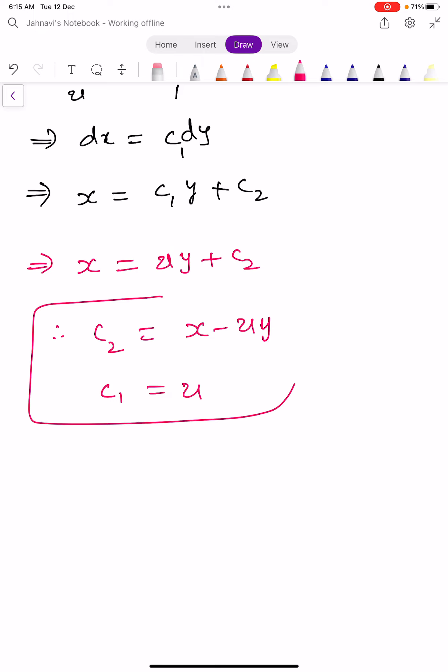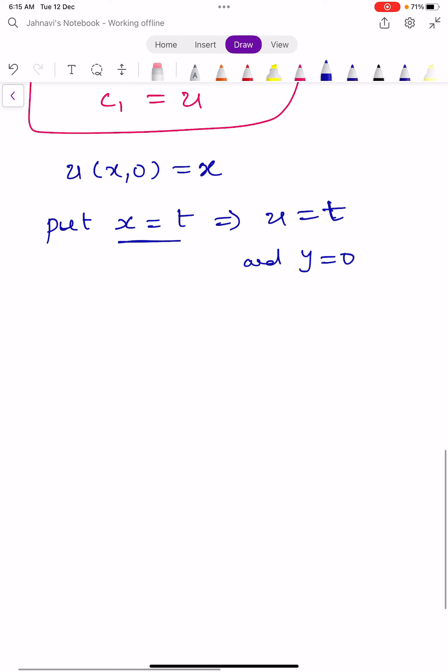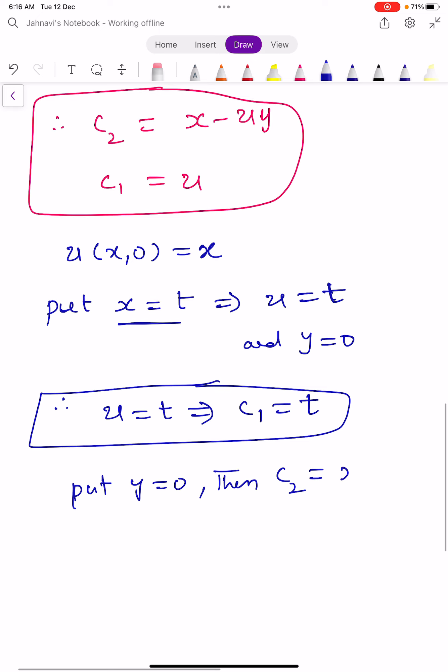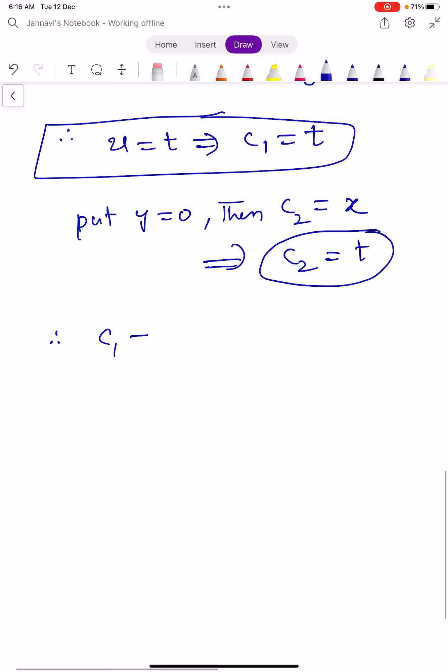Now, by given data, the boundary condition is u(x,0) = x. Put x = t, you get u = t and y = 0. If u = t, then c1 = t. Put y = 0, then c2 is also equivalent to x, which means c2 = t. So this condition shows both c1 = c2 = t.